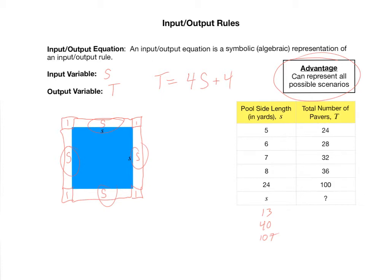Whereas this is not building off the previous output. Instead, it's telling you directly, what can I do to the input to get the corresponding output? And this is that rule. When the input is s, the output is four s plus four. Let's see why this input-output equation is so valuable to us.